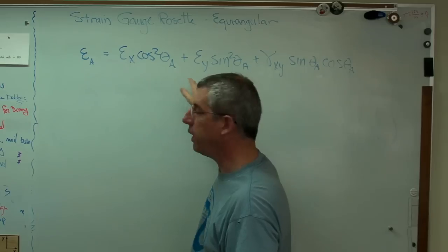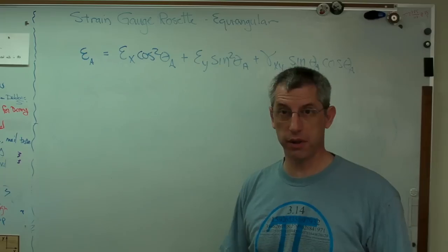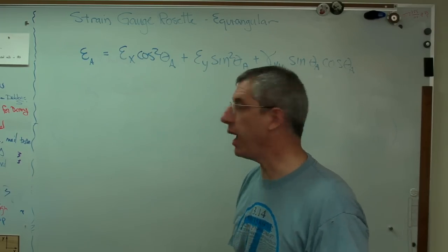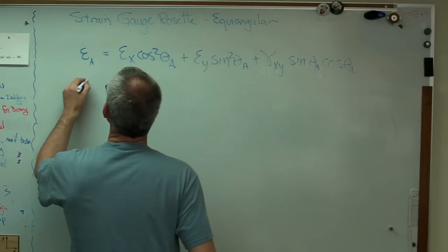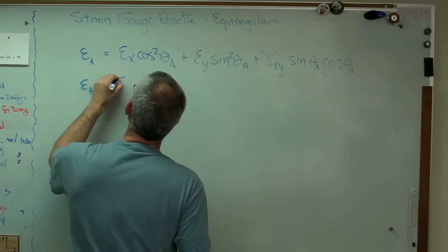So I've got three unknowns. So far I've got one equation. Well, if the fundamental theorem of algebra is still right, I got to have two more equations. Well, that's why there's three gauges in the rosette. So we can solve these three equations. Somebody was thinking when they thought this up.